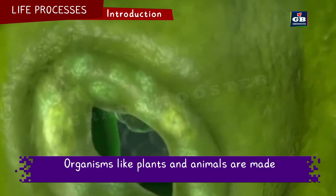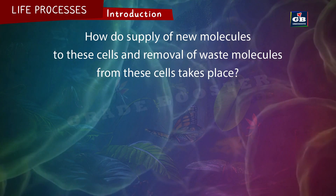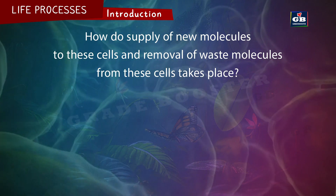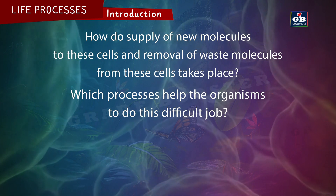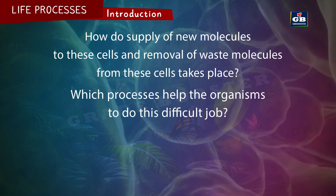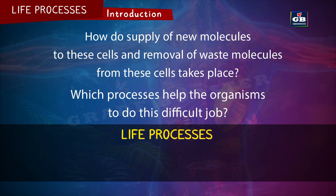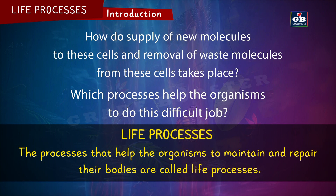Organisms like plants and animals are made up of millions of cells. How do the supply of new molecules to these cells and removal of waste molecules from these cells take place? Which processes help the organisms to do this difficult job? Life processes are a set of processes that help the organisms to do this job. The processes that help the organisms to maintain and repair their bodies are called life processes.